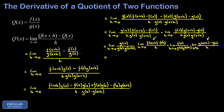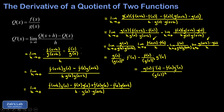The remaining limit in the first piece is exactly the definition of f prime of x. In the second piece, taking the limit of f of x over the two g-containing terms gives f of x over g of x squared, which will be our common denominator. The final piece is exactly the definition of g prime of x. Multiplying the derivatives into the numerators of their respective fractions gives g of x times f prime of x in the first, and minus f of x times g prime of x in the second. They already share a common denominator, so we write this as a single fraction.